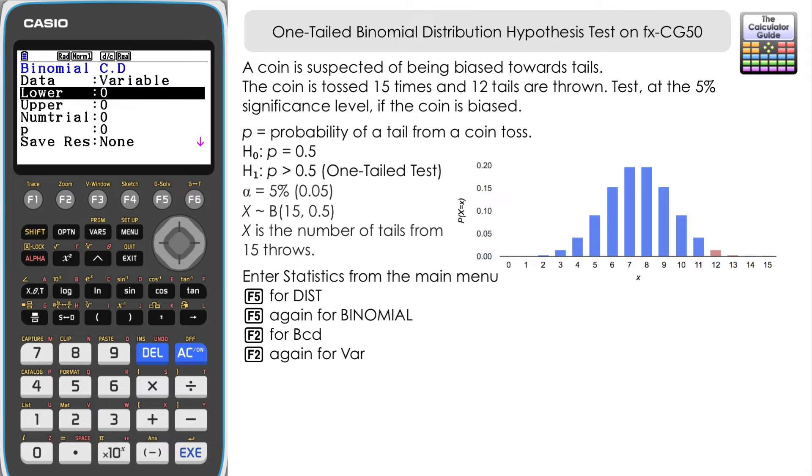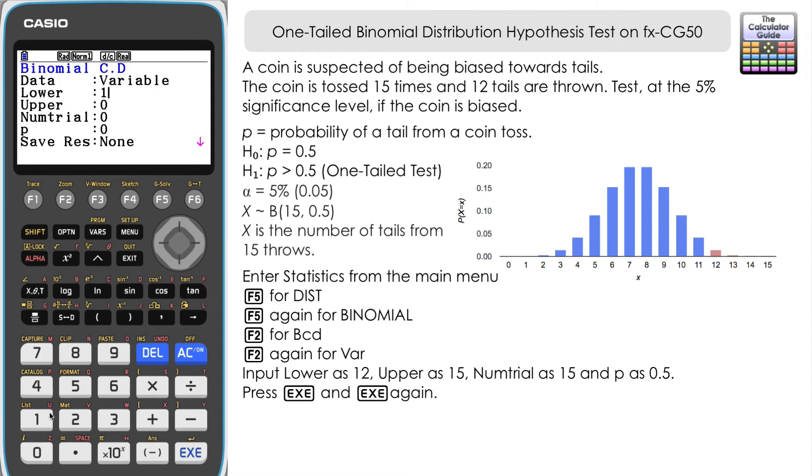Because we're dealing with an upper tail, our lower limit is our X value, the number of tails we achieved, which is 12. So we'll put that as 12.